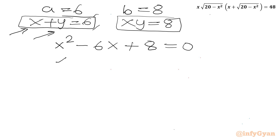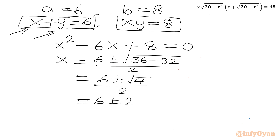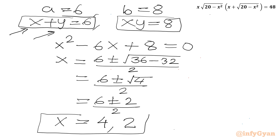Applying the quadratic formula: x equals (6 plus or minus square root of (36 minus 32)) over 2, which simplifies to (6 plus or minus square root of 4) over 2, giving (6 plus or minus 2) over 2. So x equals 8 over 2 equals 4, or x equals 4 over 2 equals 2. We have two x values: 4 and 2.